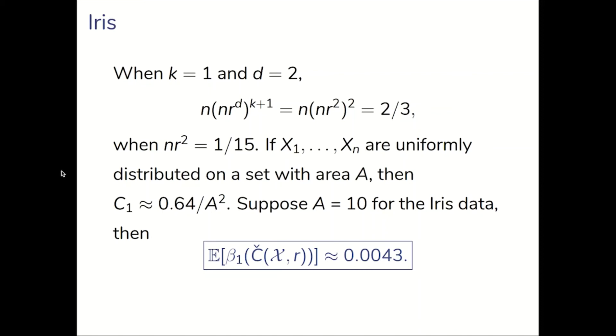If x1 to xn are uniformly distributed on a set with area a, recall that we were interested in the behavior of the persistence diagram for such a uniform distribution, then c1, the constant from the previous slide, is approximately equal to 0.64 over a², for Betti 1 that is. Supposing that a is equal to 10 for the iris data, then the average Betti 1 of the Čech complex is approximately 0.0043, which is very close to the true value of 0.